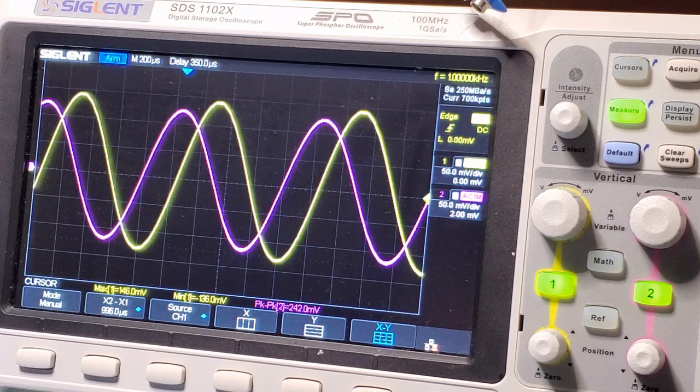I'm changing the amplitude adjust and you can see the yellow signal is getting stronger and the purple trace is getting weaker. Obviously, you need to make sure the amplitude of the I and Q signals are as close to the same as you can make it.